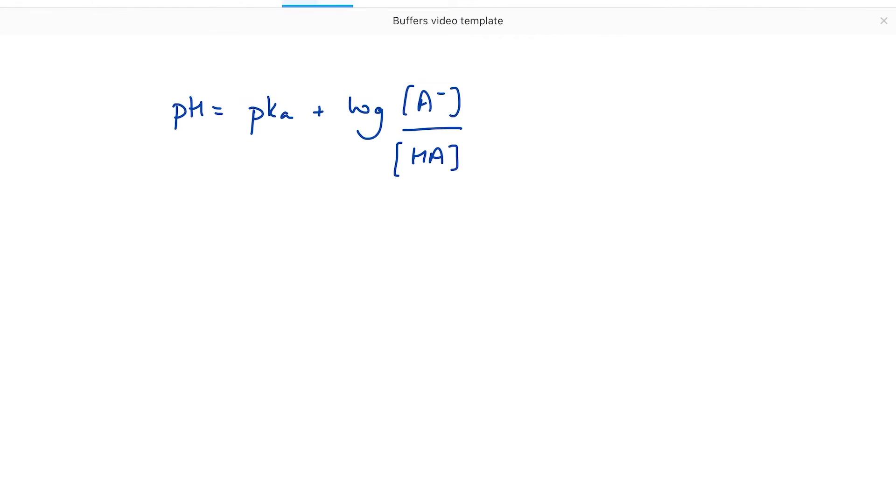We know that the pH is 3.5. pKa is minus log of the Ka, so 3.167 plus log of A-, and we know that HA is 0.5.